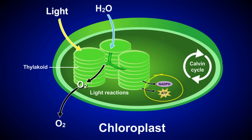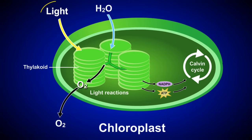The light reactions use light energy and water to produce ATP and NADPH. Oxygen gas is released as a byproduct. Together, the ATP and NADPH formed during the light reactions are used by the Calvin cycle reactions, which are discussed in a separate tutorial. The important thing to remember is that plants need both light and water to survive — without these ingredients, the light reactions would shut down, stalling photosynthesis and causing the plant to die.